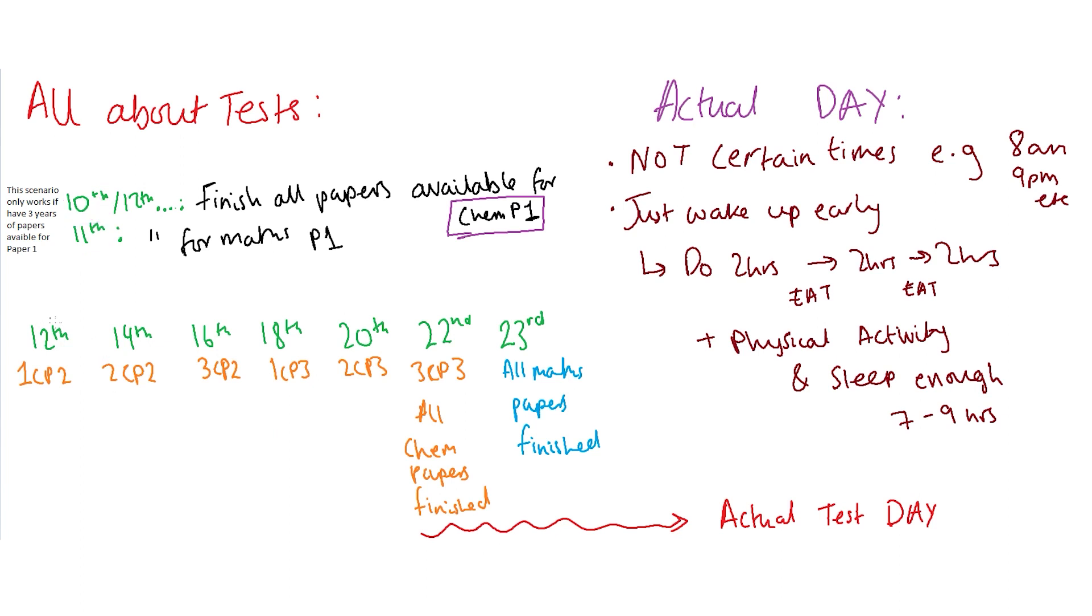So it will look a bit like this. So remember this only works if there's three years of papers available for each one. So here on the 12th I'll do the first chemistry paper 2. On the 14th I'll do the second chemistry paper 2. 16th the third chemistry paper 2. 18th the first chemistry paper 3 this time. And then on the 22nd I'll finish all three chemistry paper 3's that are available. And that's that for chem. And I'll finish maths on the 23rd because I was alternating between.